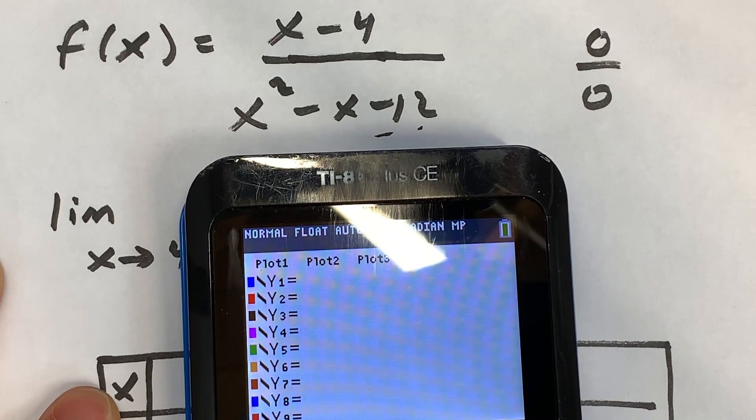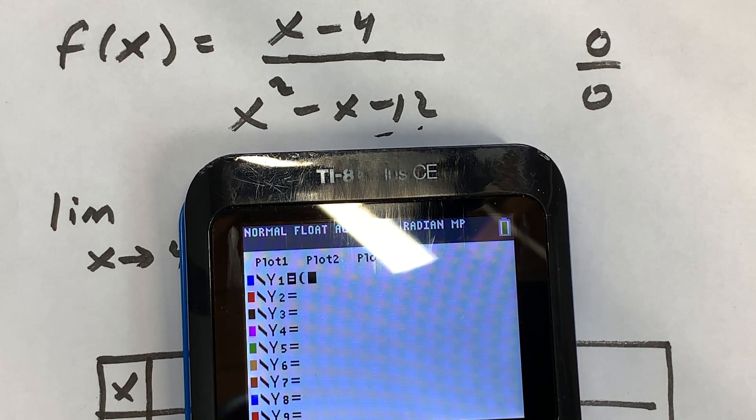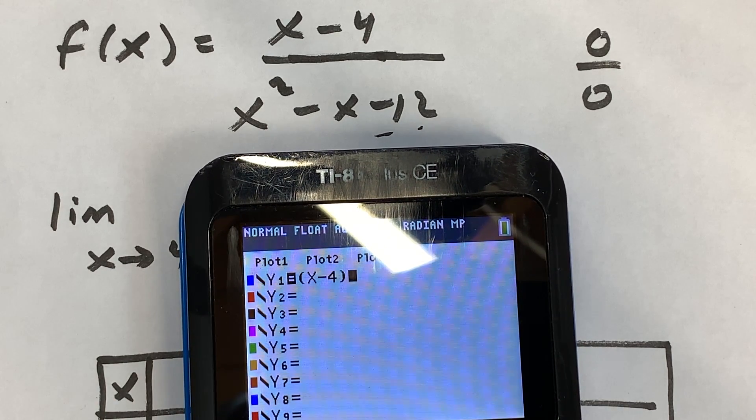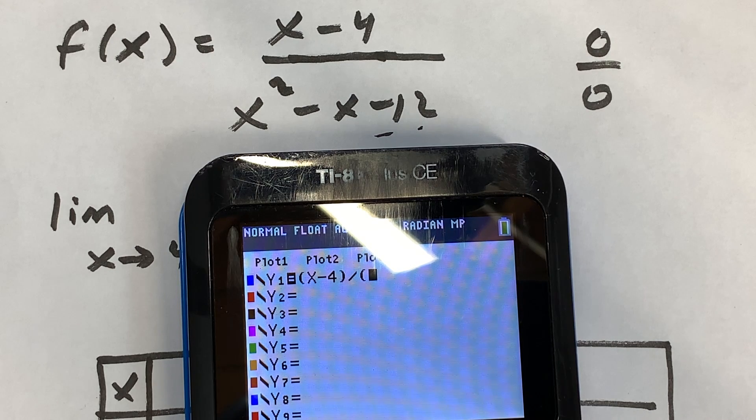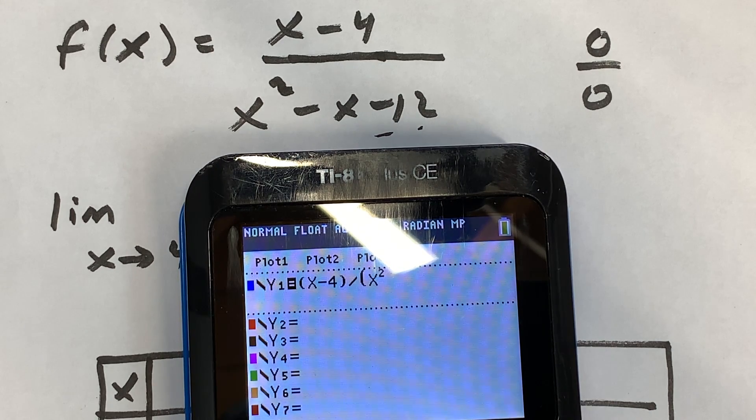And we're going to put in our function. So what do we have? We've got x minus 4, and you want to put that in parentheses so it takes it as a group, divided by—and then the denominator you also want to put in parentheses—x squared minus x minus 12.